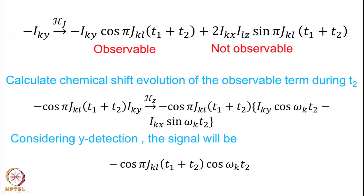We take this term and calculate the chemical shift evolution of the observable term during T2. This gives: cos(πJ_KL(T1+T2)) multiplied by [IKY cos(ωK·T2) minus IKX sin(ωK·T2)]. Detecting the Y-magnetization, the signal will be cos(ωK·T2)·cos(πJ_KL(T1+T2)). Notice that the coupling constant evolution modulates the detected signal and has both T1 and T2 dependence — this is a very interesting situation.